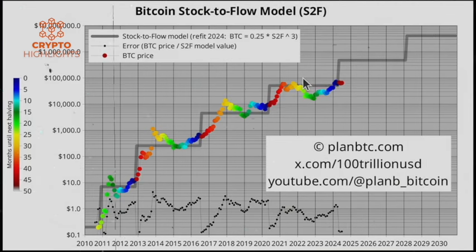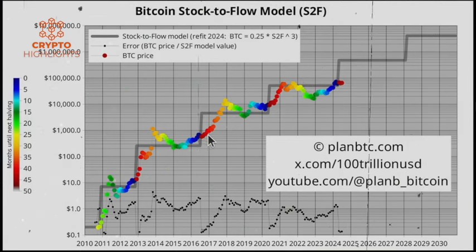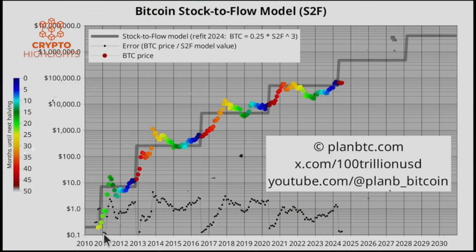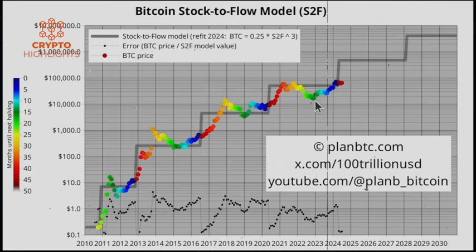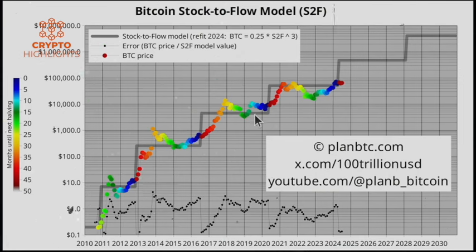If you don't use log scale, you'll see that everything before, let's say, 2017 becomes a flat line at the bottom. Then it seems like all the action is at the end of the time series, which is not true, as you can see from here.